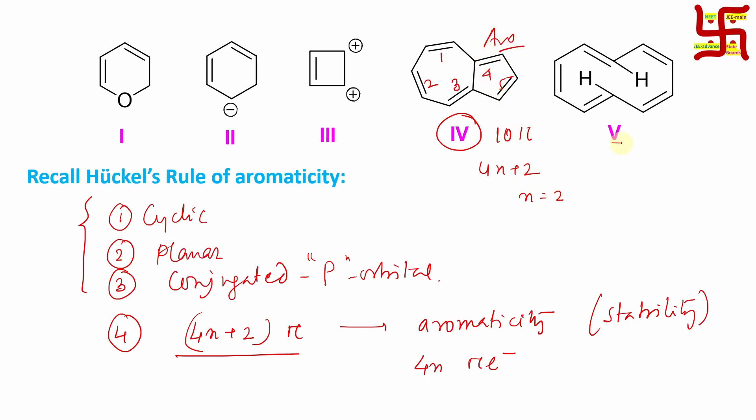If you look at it is not at all aromatic. Why? You will say certain pi electrons are there but they are not planar. Why? Because these two hydrogens have severe repulsion. So this severe repulsion forces this molecule to be out of planarity. So according to rule number 2 it is not aromatic. It is non-aromatic.